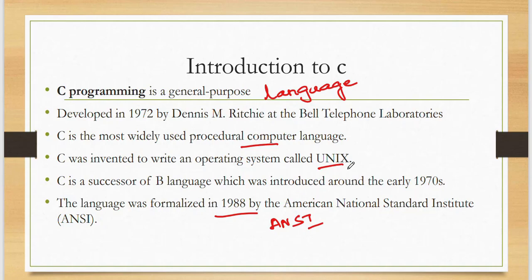To recap: C is a general purpose language applicable to all domains. It was developed at Bell Laboratories in 1972 by Dennis Ritchie. Using C, we can create the operating system called Unix. C is the successor of the B language, and it was formalized in 1988 by the American National Standard Institute (ANSI).